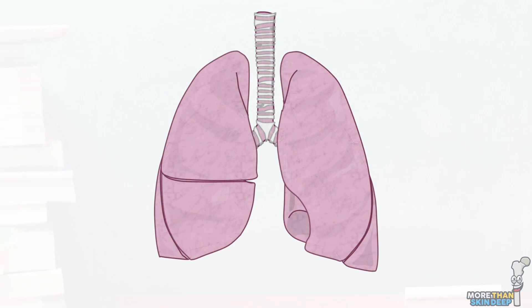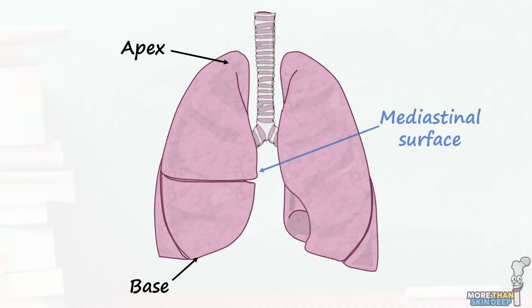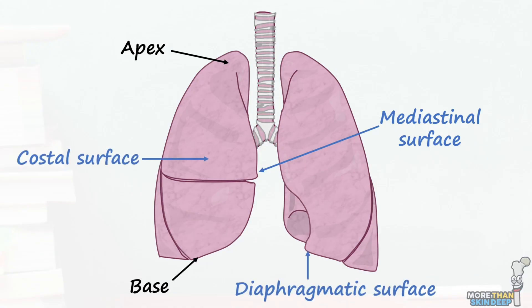The lungs are roughly cone-shaped, with an apex at the top and a base at the bottom. They have three surfaces: one which faces the heart, known as the mediastinal surface; one facing the ribcage, known as the costal surface; and one facing the diaphragm, known as the diaphragmatic surface.